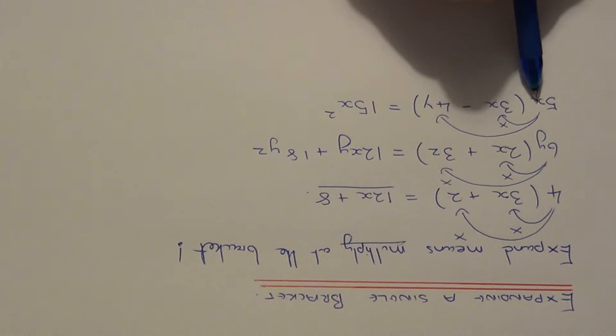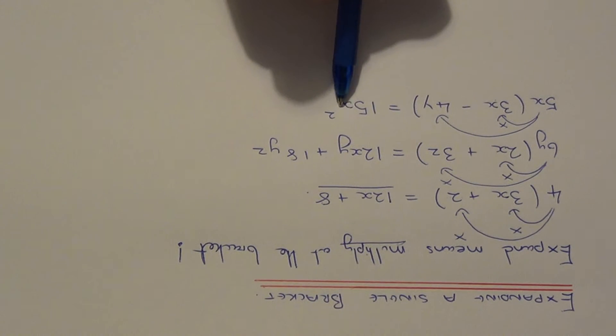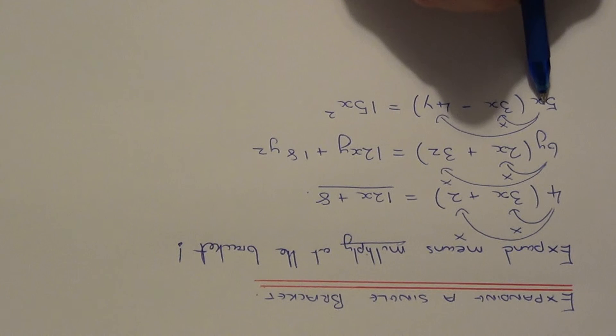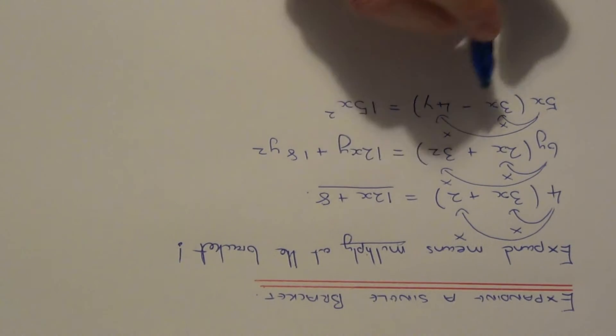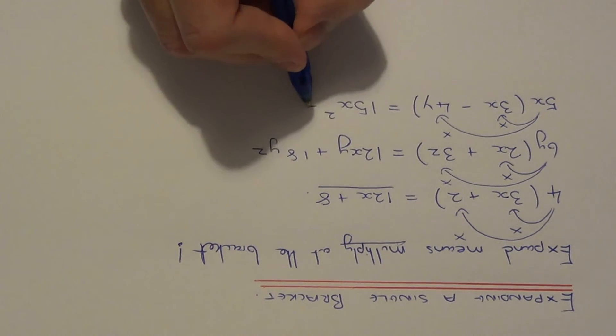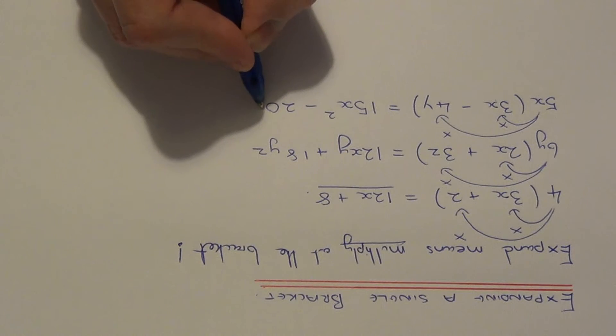You should already know that x times x is x squared. Again finally you need to do 5x times minus 4y. This will give you minus 20xy.